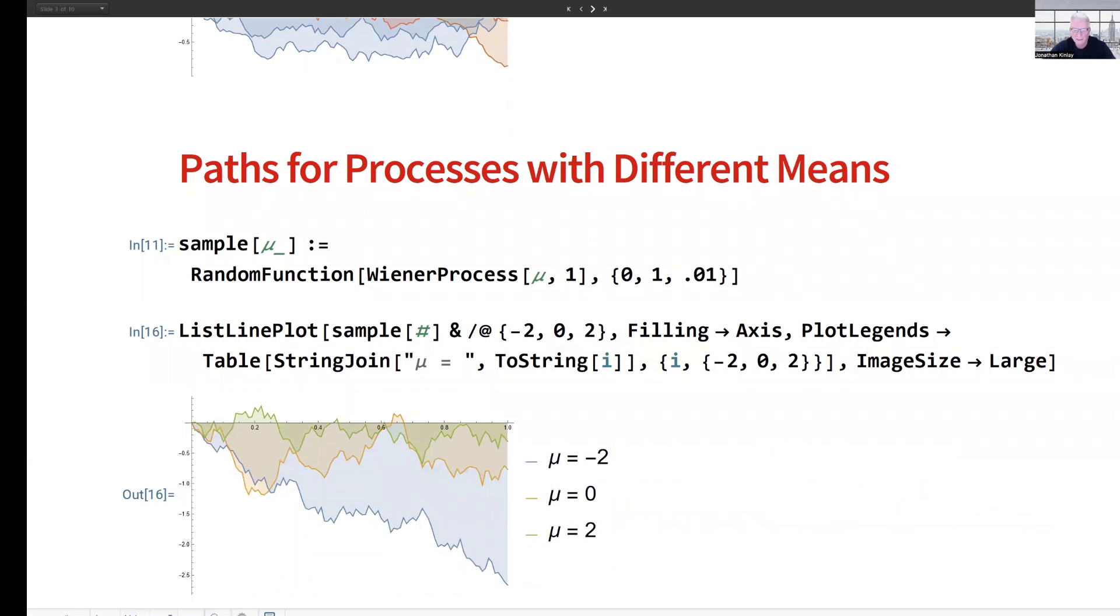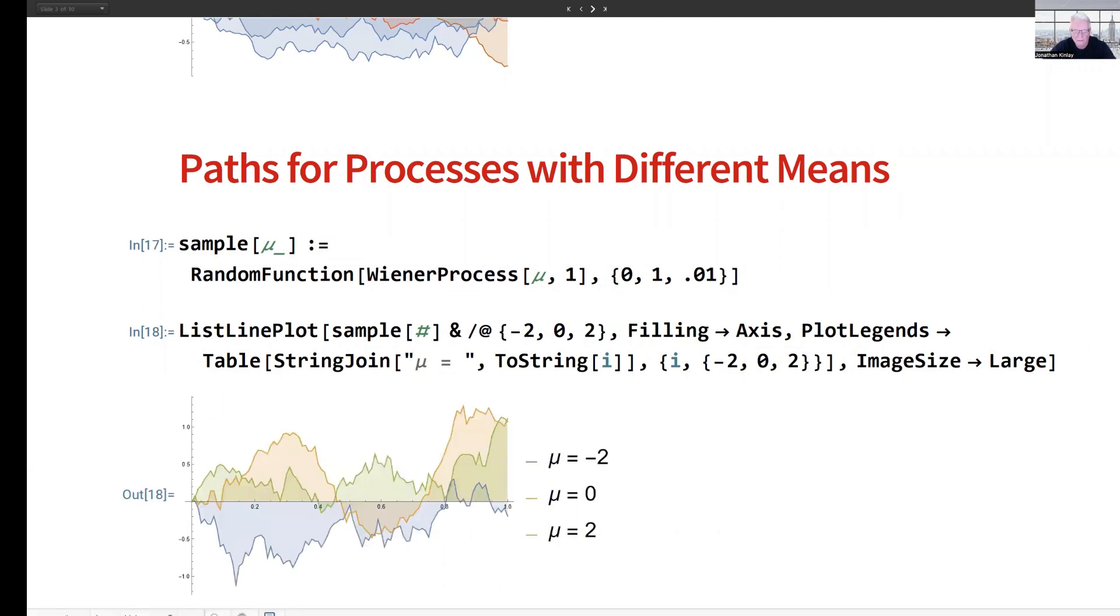Here you can see that for mu equal to -2, the blue curve very clearly shows a downward negative trend. The process with mean of 0 tends to move sideways, and so too does the process with mean set to 2. Obviously, we can repeat that and look at several different types of examples for processes with those means.